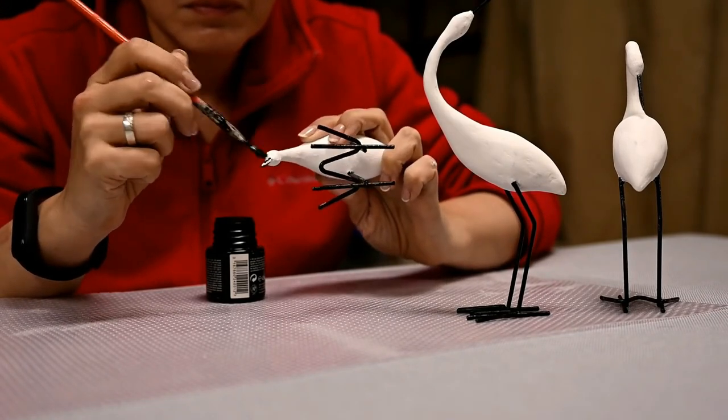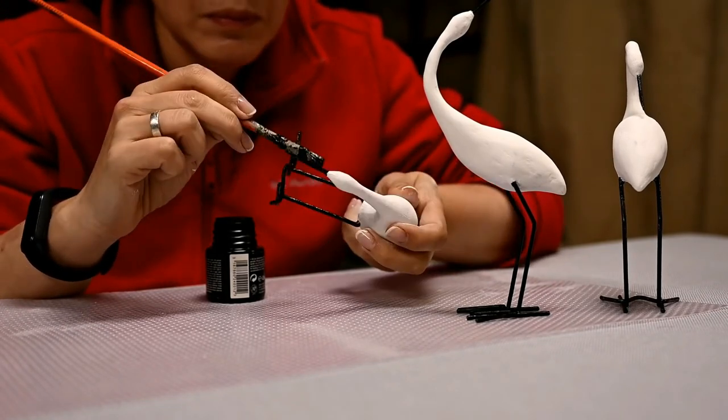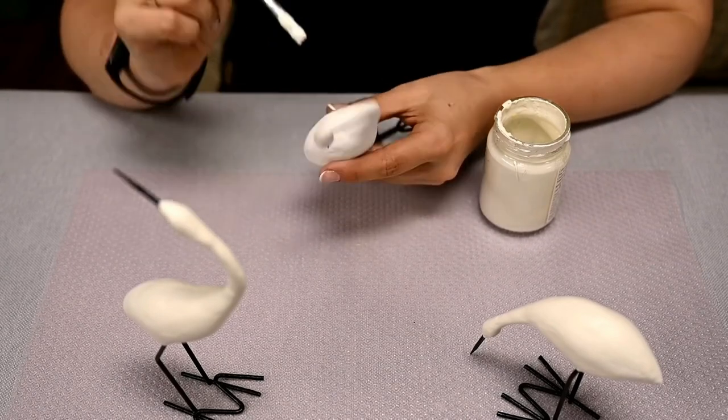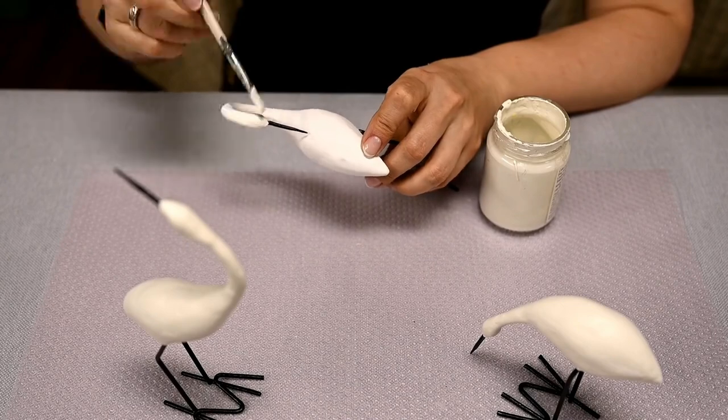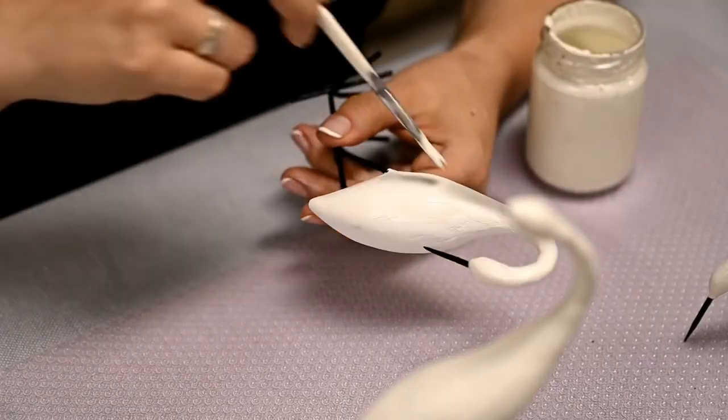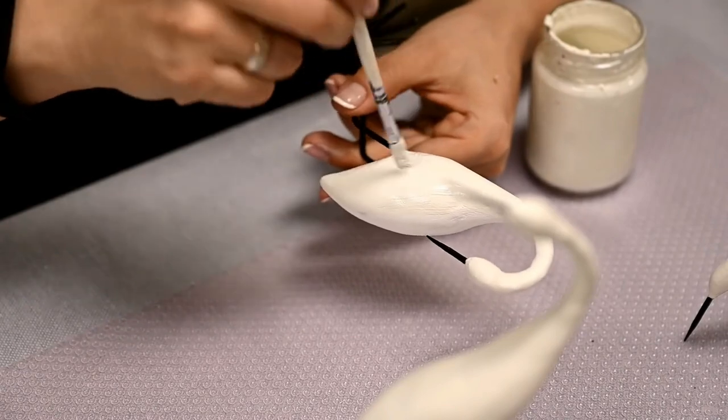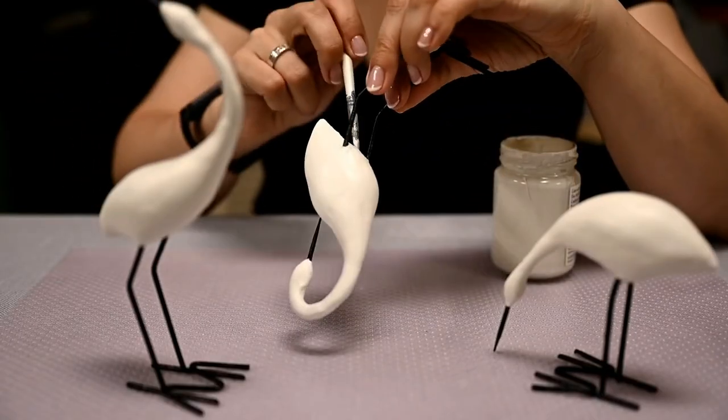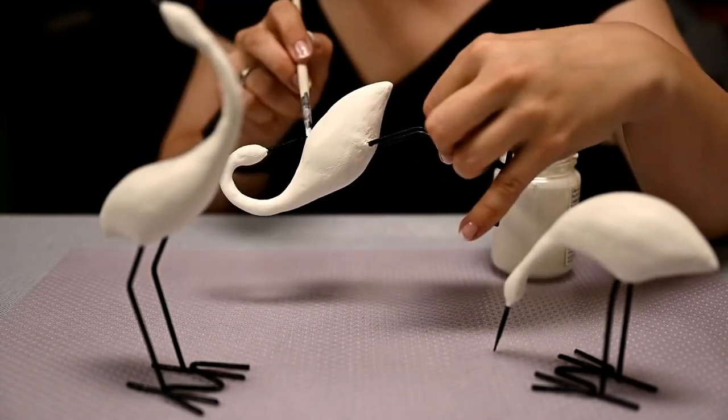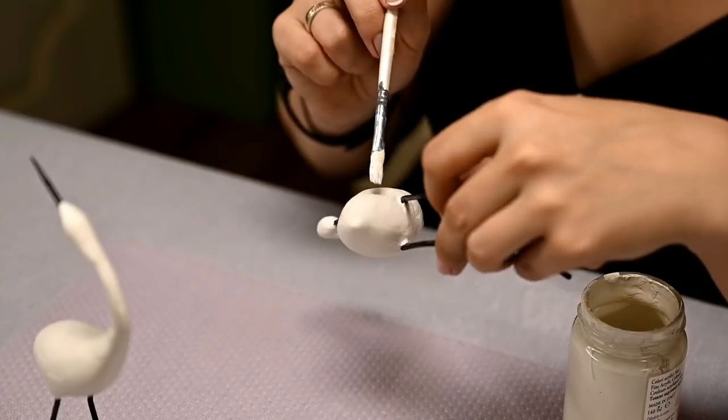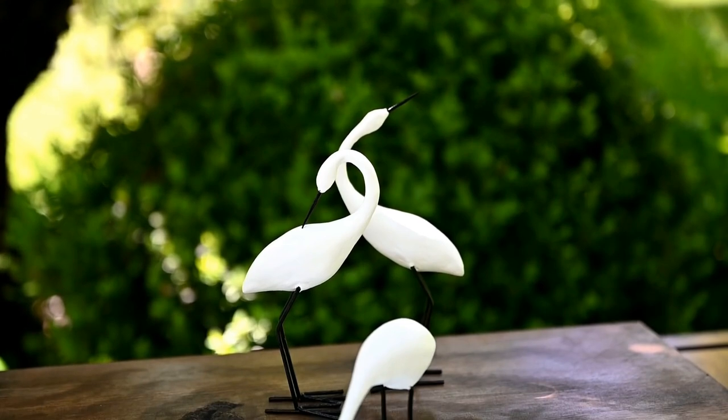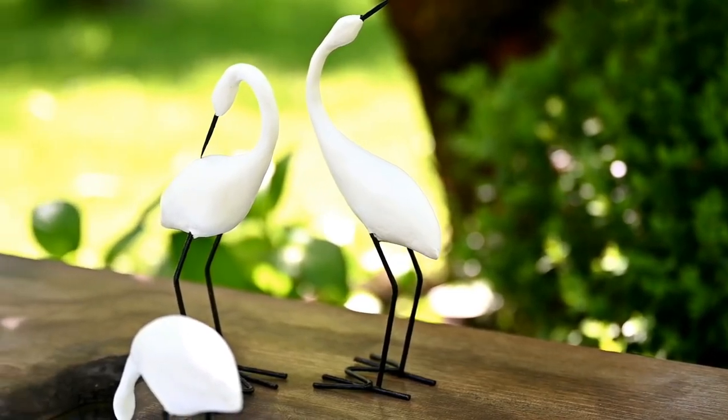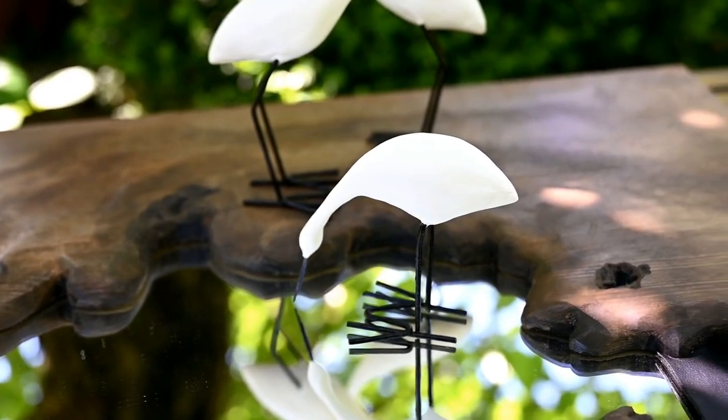In the meantime I've painted the legs and the beaks black. I've decided not to draw the eyes for a more sleek look. I don't try to make realistic birds after all. All that is left is to paint the body white and to seal the birds with a matte sealer.